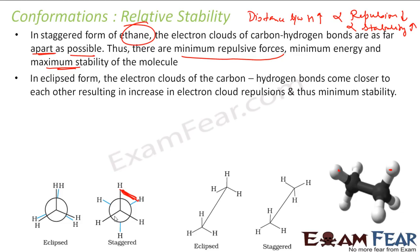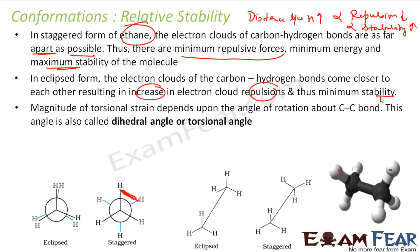In the eclipsed conformation, the distance between hydrogens is minimum, so repulsion is maximum, and thus stability is minimum. The magnitude of the torsional strain — which obstructs the rotation — depends on the angle of rotation about the C-C bond.